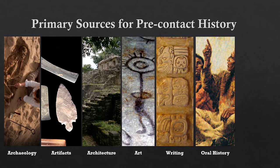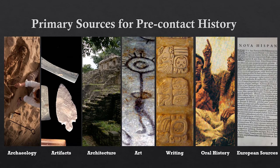Finally, after first contact with Europeans beginning in the 16th century, we also have European written sources describing the indigenous peoples and cultures they encountered. However, these sources can be problematic, as Europeans did not always understand what they were seeing. Misinterpretation and outright hostile depictions are common. Nevertheless, from all of these types of primary sources, we can build up a picture of the lives of the indigenous peoples of the Americas and Oceania prior to first contact.